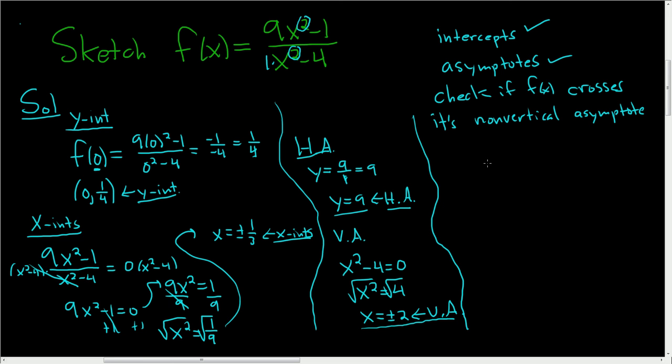So in this case, the non-vertical asymptote happens to be a horizontal asymptote. The reason I say non-vertical is because it could be what's called an oblique or slant asymptote. In this case, it's just a horizontal one. So how do you do this? Let's check.